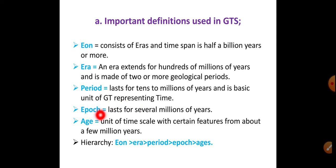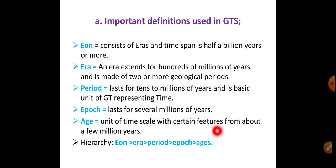An Epoch lasts for several millions of years. An Age is the unit of the time scale with certain features, lasting from about a few million years. So the hierarchy in decreasing order of time span is: Eon, Era, Period, Epoch, and Age.